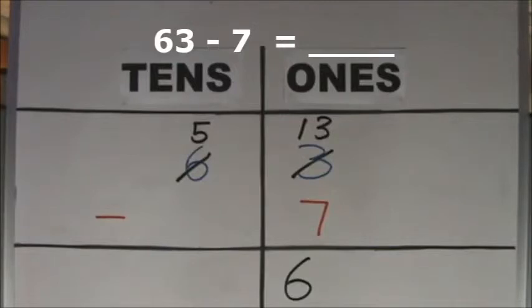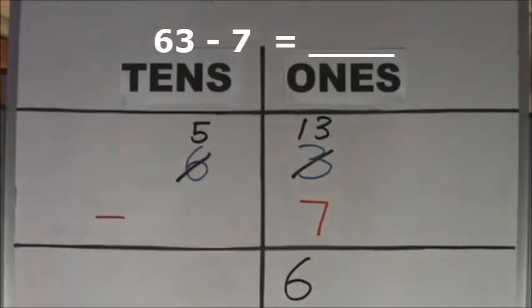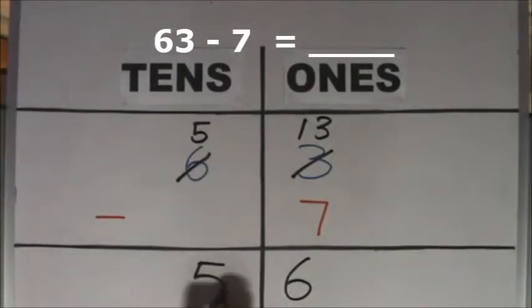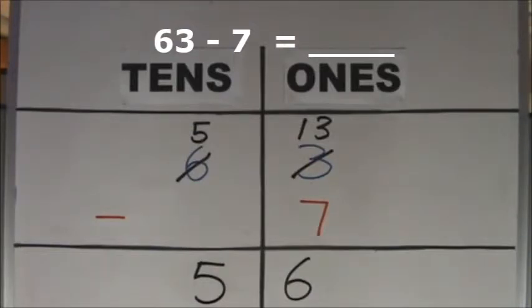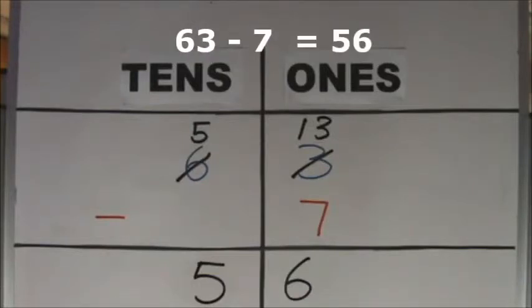How many tens do we have left? We have 5 tens left. When we subtract 7 from 63, we get 56. 63 minus 7 equals 56.